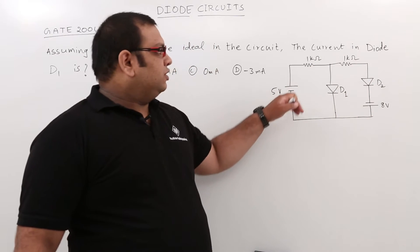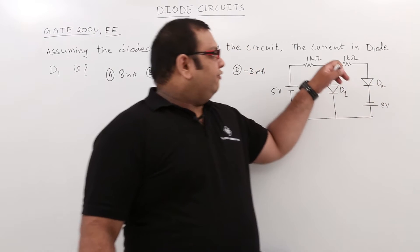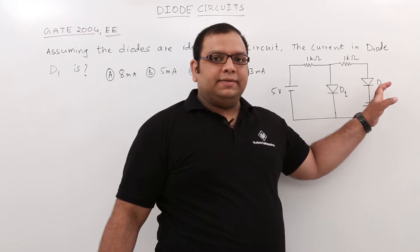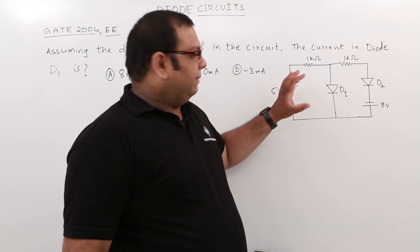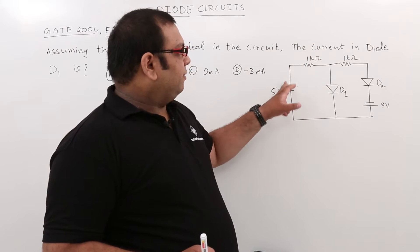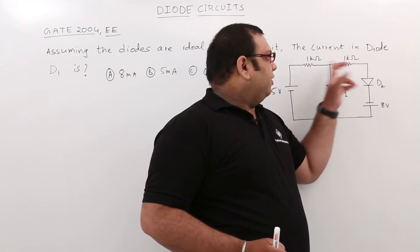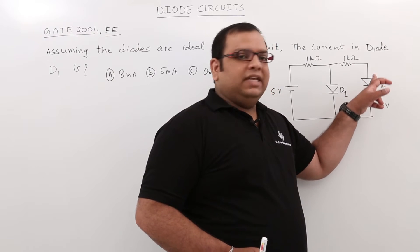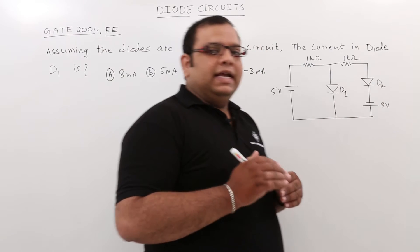In this circuit we have 5 volts at one point and 8 volts connected to the negative terminal of D2. We need to find the current in D1. For this, we need to determine whether D1 or D2 is forward biased. Based on the polarity, D1 appears forward biased and D2 also appears forward biased. Let us assume initially that both D1 and D2 are forward biased.